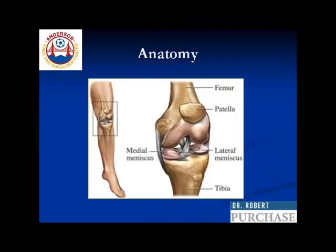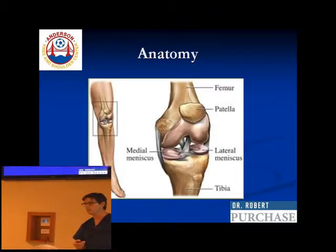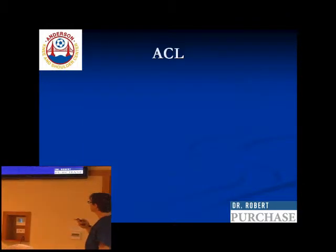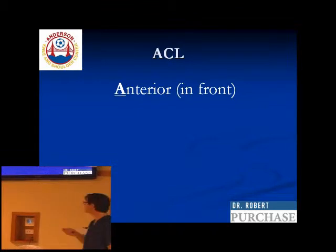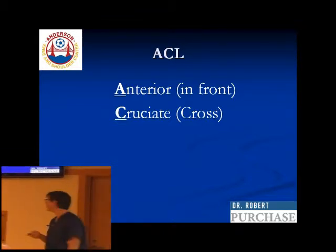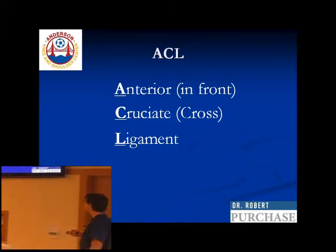The ACL is the ligament in the knee. The knee is the femur — the thigh bone coming down — and the tibia, the shin bone, coming up. You can see the medial and lateral menisci are labeled, and what's not labeled is the ACL right there in the middle. I like to demystify medical nomenclature. ACL stands for anterior — which just means in front — cruciate — which means cross, like a crucifix — and L is ligament, a soft tissue structure that connects two pieces of bone and acts like a check rein against abnormal motion.